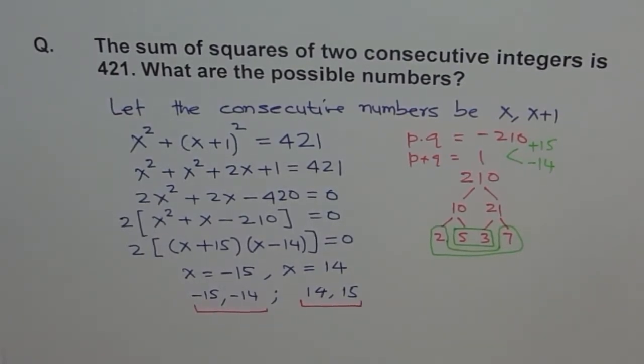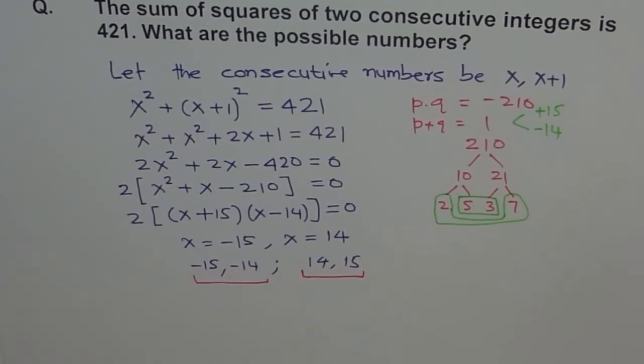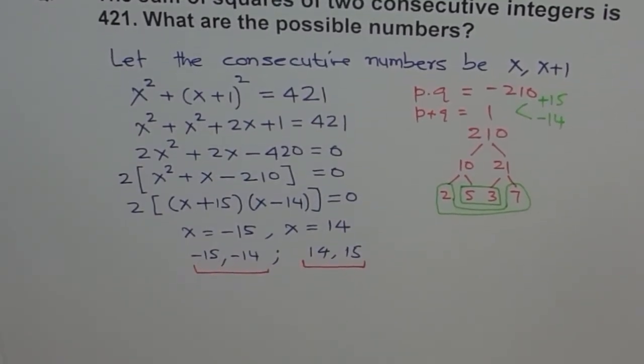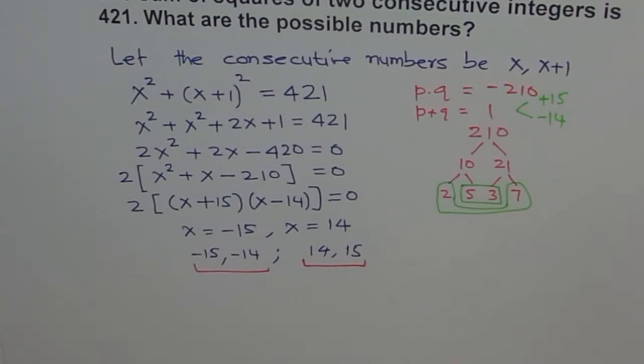Either minus 15 and minus 14, or 14 and 15. These are the two possible answers. The sum of squares of two consecutive numbers which could be minus 15 and minus 14, because when you square them they become positive, and when you add them you get 421, or 14 and 15. I hope you also appreciate the way we factored and found product and sum, and that helped us to factor our quadratic equation. Thank you.